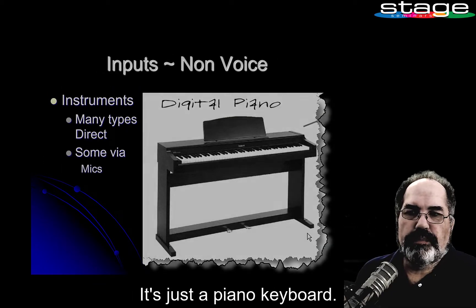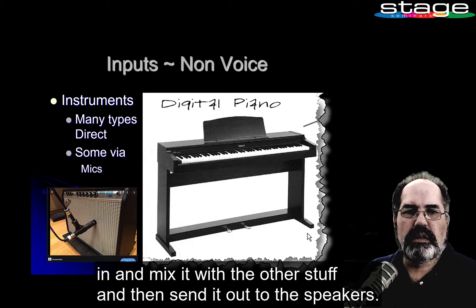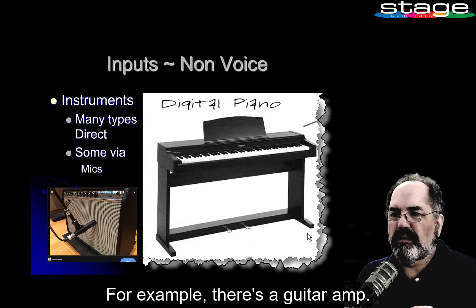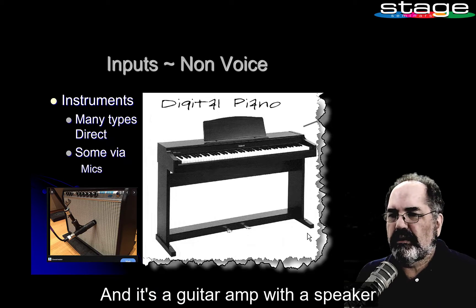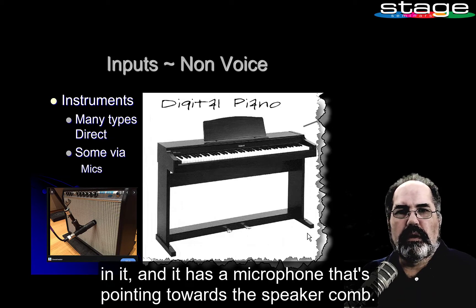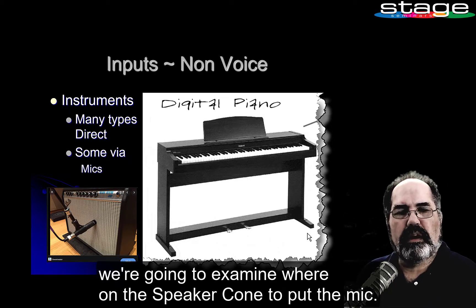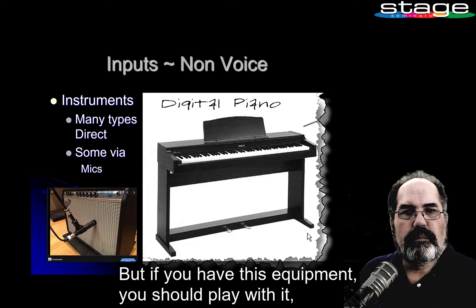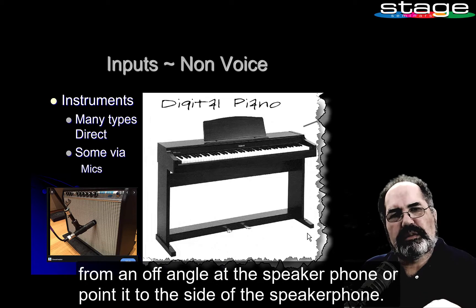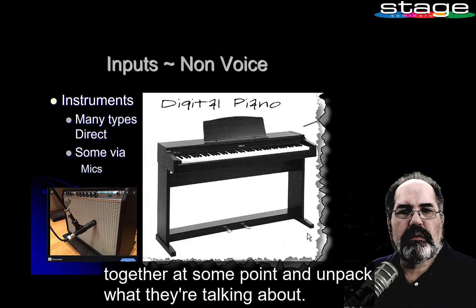Here's a musical instrument — a piano keyboard — and you can plug this directly into the mixer, mix it with everything else, and send it out to the speakers. Some musical instruments, though, it's better to mic them separately. For example, there's a guitar amp with a speaker in it and a microphone pointing towards the speaker cone. Move the mic around — point it straight at the cone, from an off angle, or to the side — they'll all sound different. There are a lot of YouTube videos on this, and we're going to watch a couple together.